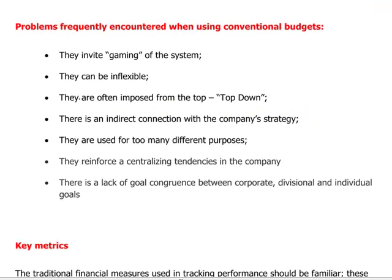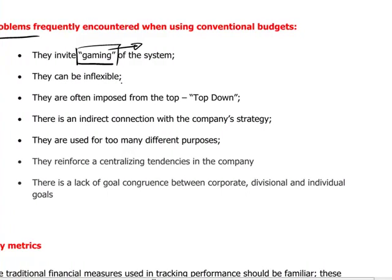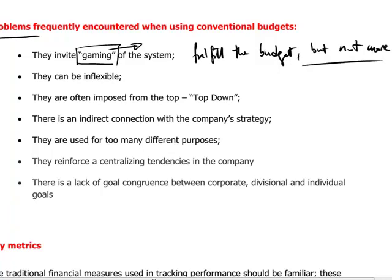There are problems connected to the use of traditional budgets. One is that they can invite gaming of the system — people will behave in accordance with achieving the budget and possibly not go beyond it. If a budget has no bonus program in place to reward superior achievement, we could expect people to fulfill the budget but not more. So if sales for the year are completed by October or November, people start thinking about Christmas shopping instead of working hard through December to exceed the budget.